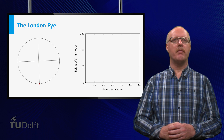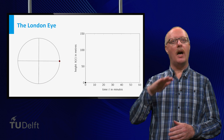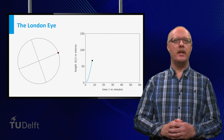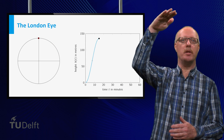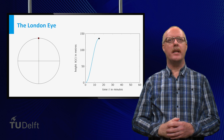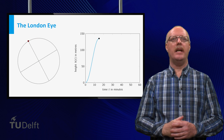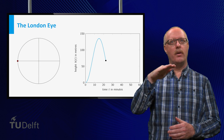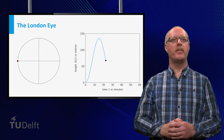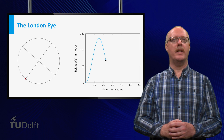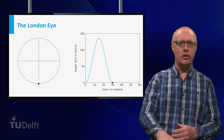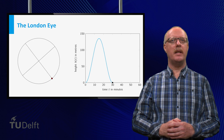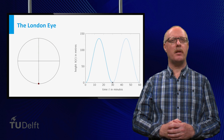After 7 and a half minutes the cabin has reached half of its maximum height, and after 15 minutes it is at its highest position. Then the cabin is going down, and after 22 and a half minutes it is back at half of its maximum height. After 30 minutes it is back down at its lowest position. From there the movement is repeated, and we end up with a periodic function.